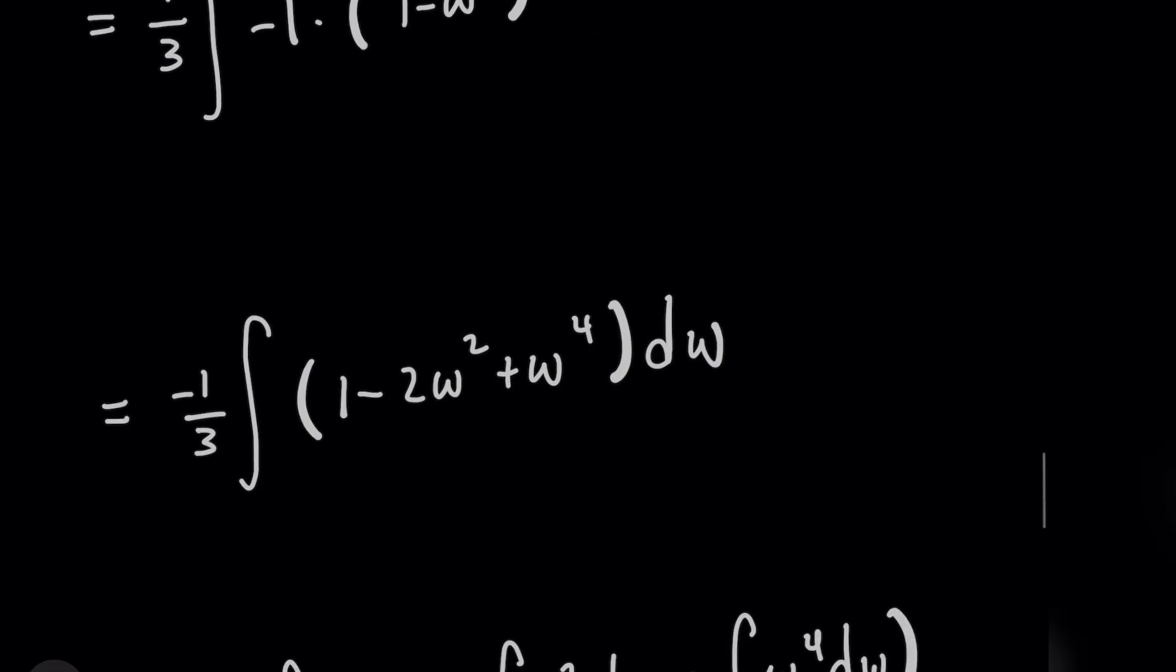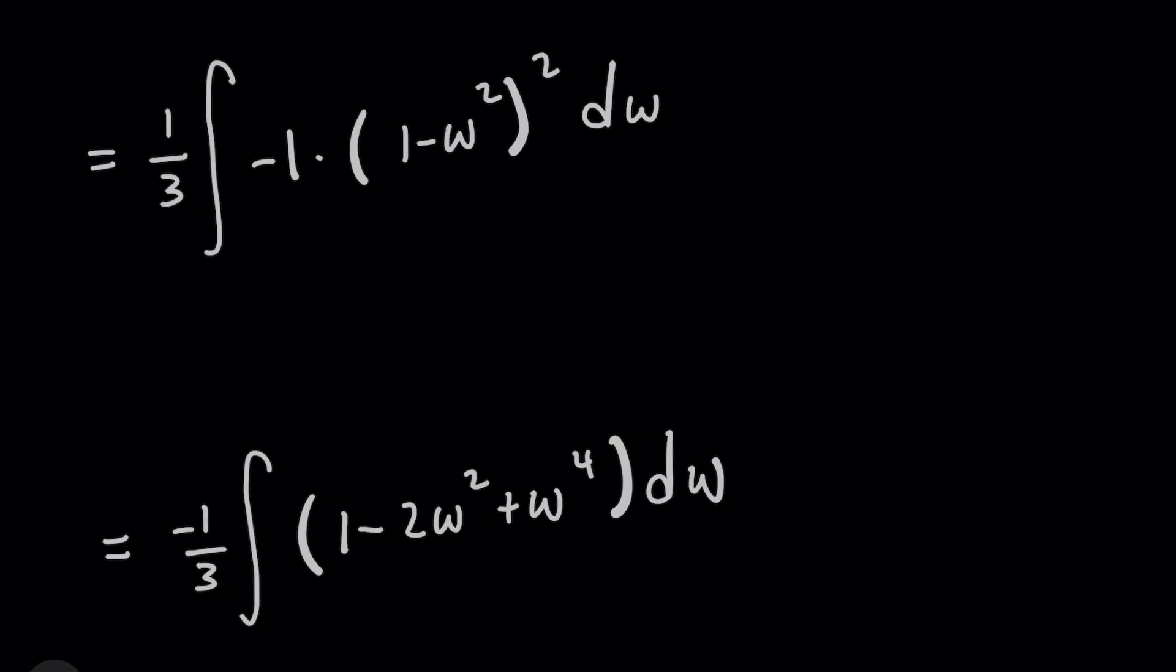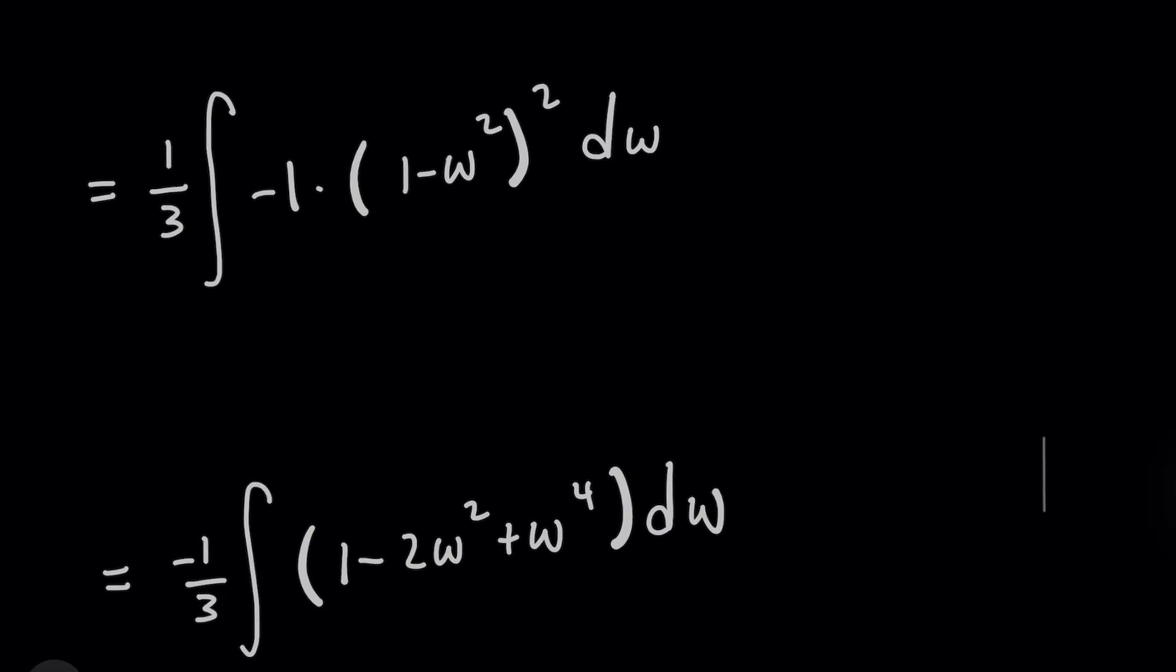And now check this out, by a binomial expansion, one minus w squared, all squared, expands to an expression that's going to be one minus two w squared, plus w to the fourth. And this is now a simple polynomial integration problem.